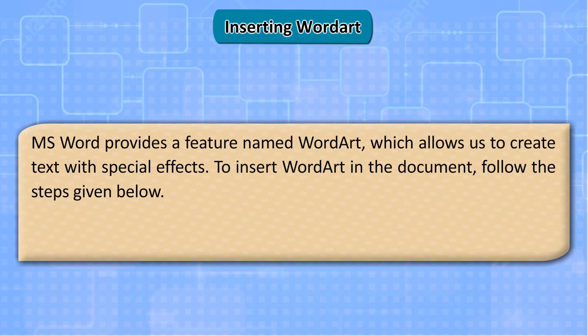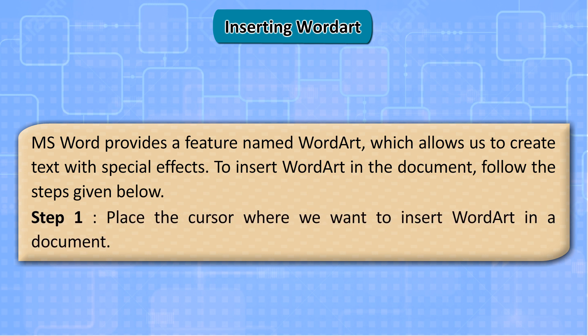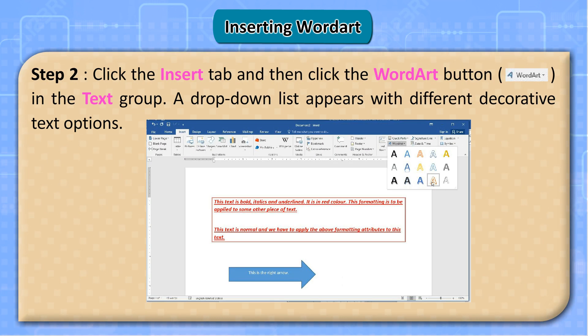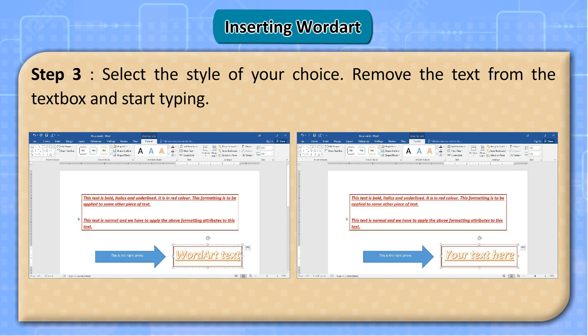Inserting WordArt. MS Word provides a feature named WordArt, which allows us to create text with special effects. To insert WordArt in the document, follow the steps given below. Step 1: Place the cursor where we want to insert WordArt in a document. Step 2: Click the Insert tab and then click the WordArt button in the Text group. A drop-down list appears with different decorative text options. Step 3: Select the style of your choice. Remove the text from the text box and start typing.